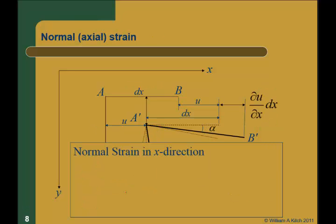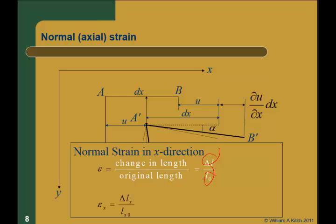So let's define those. The normal strain in the x direction — normal strain is change in length divided by the original length. In the x direction, the change in length is the partial of u with respect to x times dx. The original length was dx. So we divide those and cancel the dx's, and we get that the normal strain epsilon in the x direction is the partial of u with respect to x.